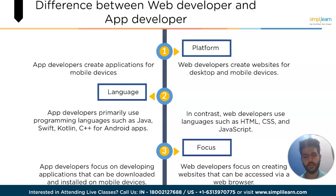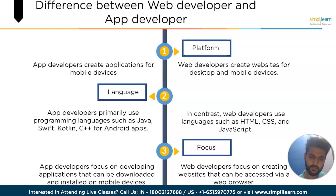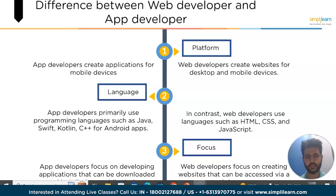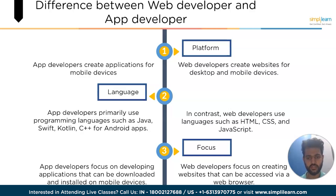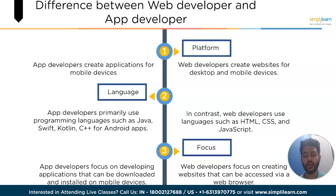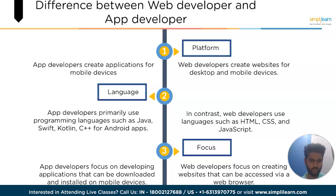The first point of distinction is platform — app developers create applications for mobile devices while web developers create websites for desktop and mobile devices. Second is language: app developers use programming languages such as Java, Swift, Kotlin and Objective-C for iOS, and Java, Kotlin and C++ for Android apps. In contrast, web developers use languages such as HTML, CSS and JavaScript. Third is focus — app developers focus on developing applications that can be downloaded and installed on mobile devices, while web developers focus on creating websites that can be accessed via a web browser.